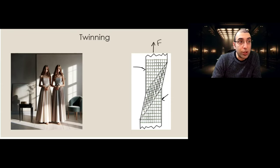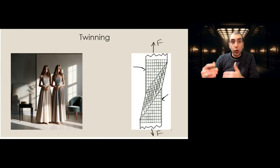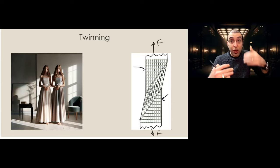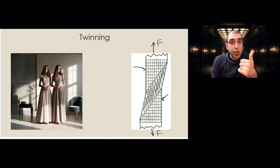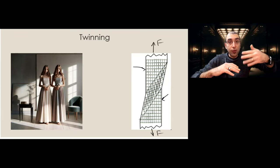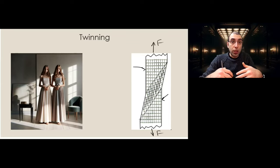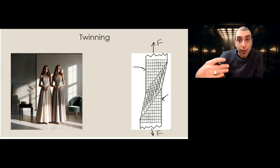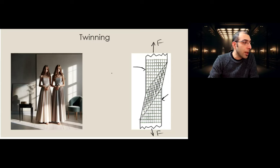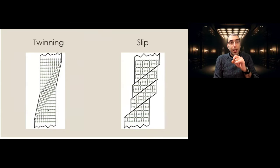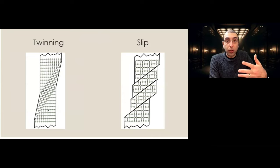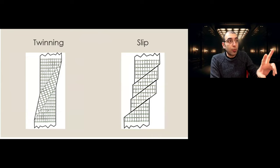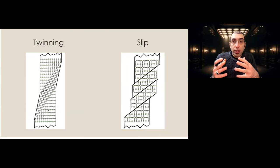The direction we are applying force causes twinning to happen. When we are applying force in this direction and we are in the plastic region, two things could happen: first is slip — sliding the atomic planes on top of each other — and the second is twinning, where the material rearranges itself so some parts become a mirror image of the other side with a twin boundary in between. If you put them side by side, slip is much more enhanced in terms of movement of atoms with respect to twinning.